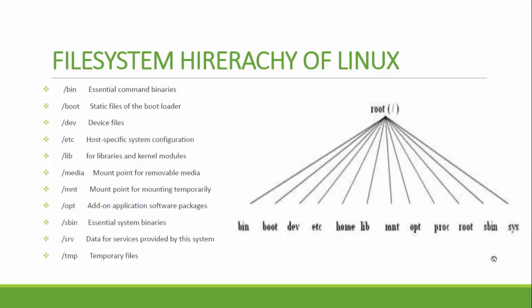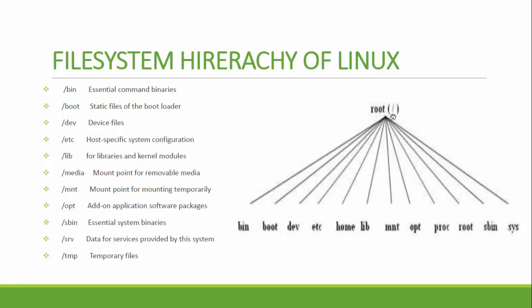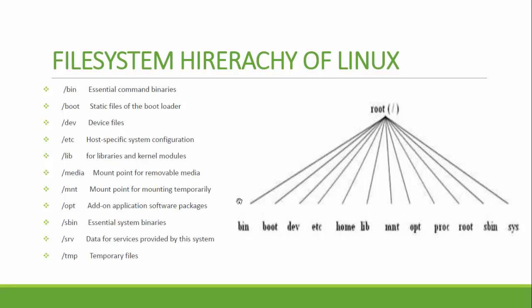In this class we will learn the file system hierarchy of Linux. The Linux file system hierarchy is a bit different from Windows. Linux has a reverse tree structure. The very first root directory is slash (/). Under that, some default directories are found when you install a fresh operating system, and each directory has its own significance.